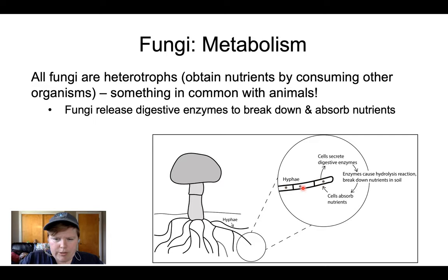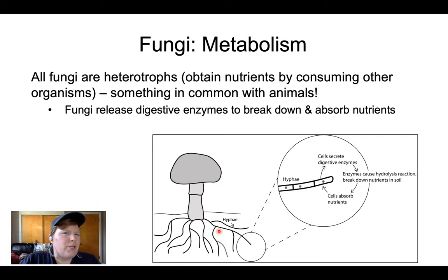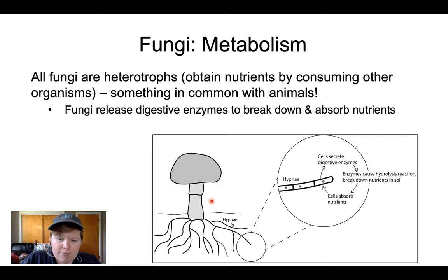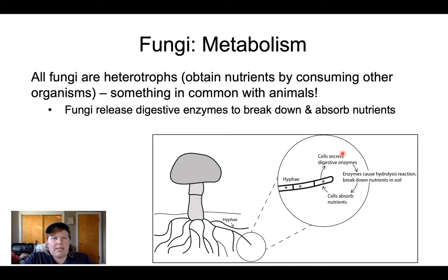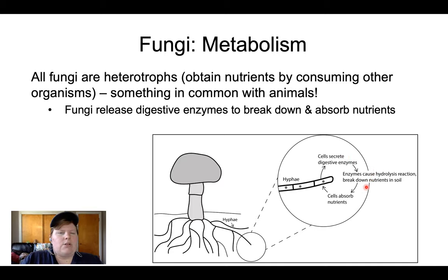Most fungi are filamentous — they're made of little filaments called hyphae, which is the main body part of a fungus: just these little threads. They're made of individual cells, and each gray circle in the diagram is a nucleus. When fungi are ready to reproduce, if they're part of the mushroom-forming group, they make a mushroom — which is basically just inflated hyphae. Their hyphae grow into whatever substrate they're on, secrete digestive enzymes, and absorb the resulting nutrients. In our stomachs, stomach acids break things down; fungi do this on the outside of their cells.